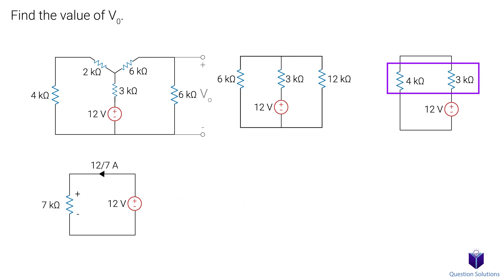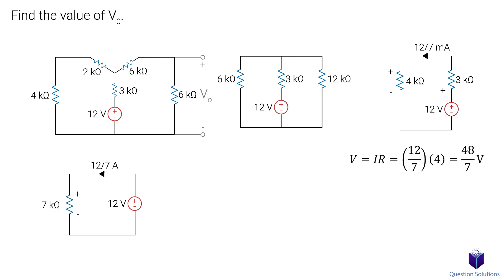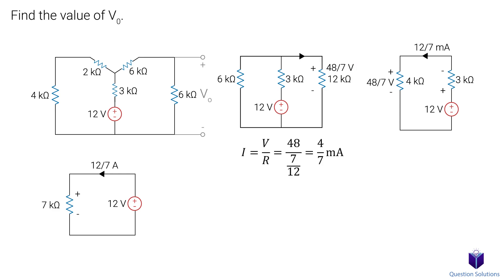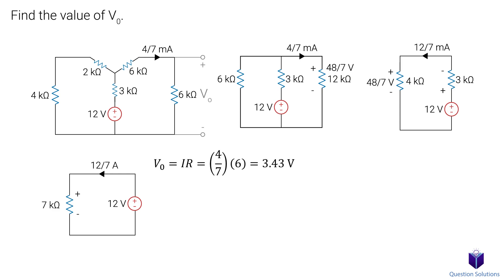Since we added two resistors in series to get this resistor, we know the current will be the same for both of them. Remember, in a series circuit, the current is the same. Now we can solve for the voltage in the 4k-ohm resistor. Now this voltage we found is the same for both of these resistors since they were combined in parallel. That means we can figure out the current flowing through this resistor. We're just working backwards until we get to the 6k-ohm resistor to get the voltage, since that's what the question is asking for. The last step is to use the current we just found to figure out the voltage in the 6k-ohm resistor. And that's our answer.